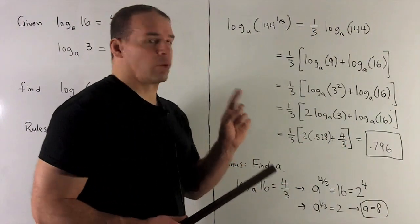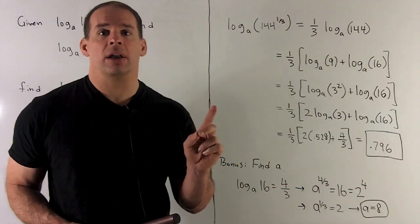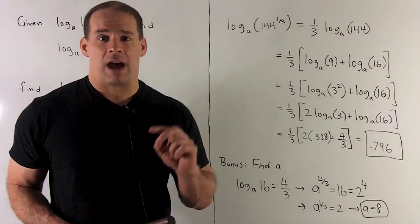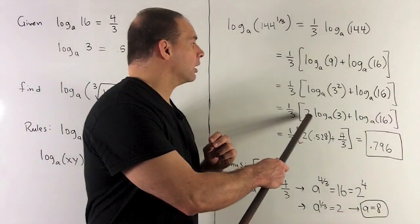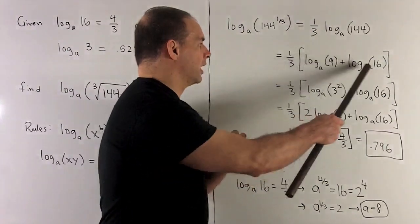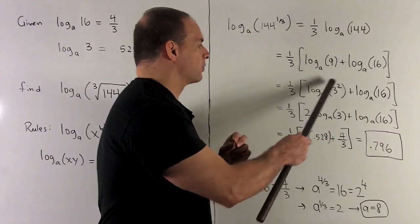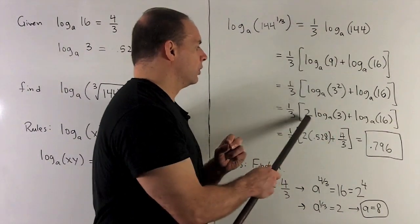And then note, I can write 9 as 3 squared. I can take that square and then move it out in front of our term here. Okay, so here we just split. We write that as 3 squared, and then move the 2 to the front.